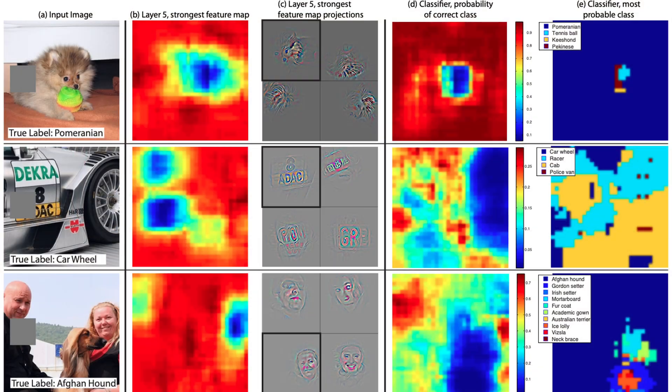Machine learning models, particularly convolutional neural networks, may be designed to learn hierarchical patterns in visual data. During training, they learn to recognize features, starting with simple edges and textures and gradually building up to more complex structures such as faces, objects, or scenes. Once trained, these models can take an image as input and produce a vector embedding that captures the most meaningful aspects of that image. This embedding becomes a numerical summary of the image's content and can be thought of as a point in a high-dimensional space.